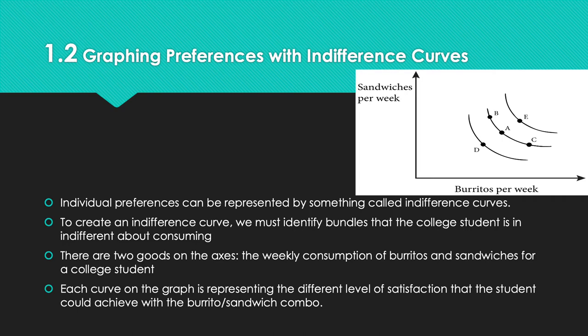Section 1.2 covers graphing preferences with indifference curves. Individual preferences can be represented by an indifference curve. Here on the slide we have sandwiches per week and burritos per week, showing three forms of indifference curves. As the curves go higher and higher, they show more satisfaction for the consumer.